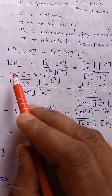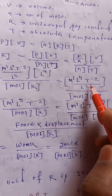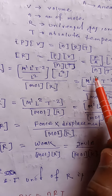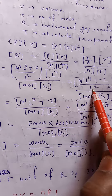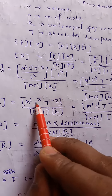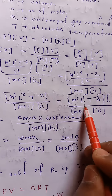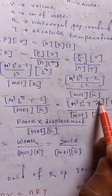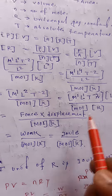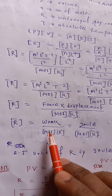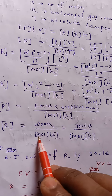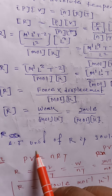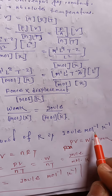Combining the powers: M¹, and for L we have 1 + 3 = 4, then 4 − 2 = 2, giving M¹L²T⁻² divided by mole and kelvin. This is the dimension of force times displacement, which is work. So the dimension of R is work divided by mole times kelvin, meaning the SI unit of R is joule mole inverse kelvin inverse.